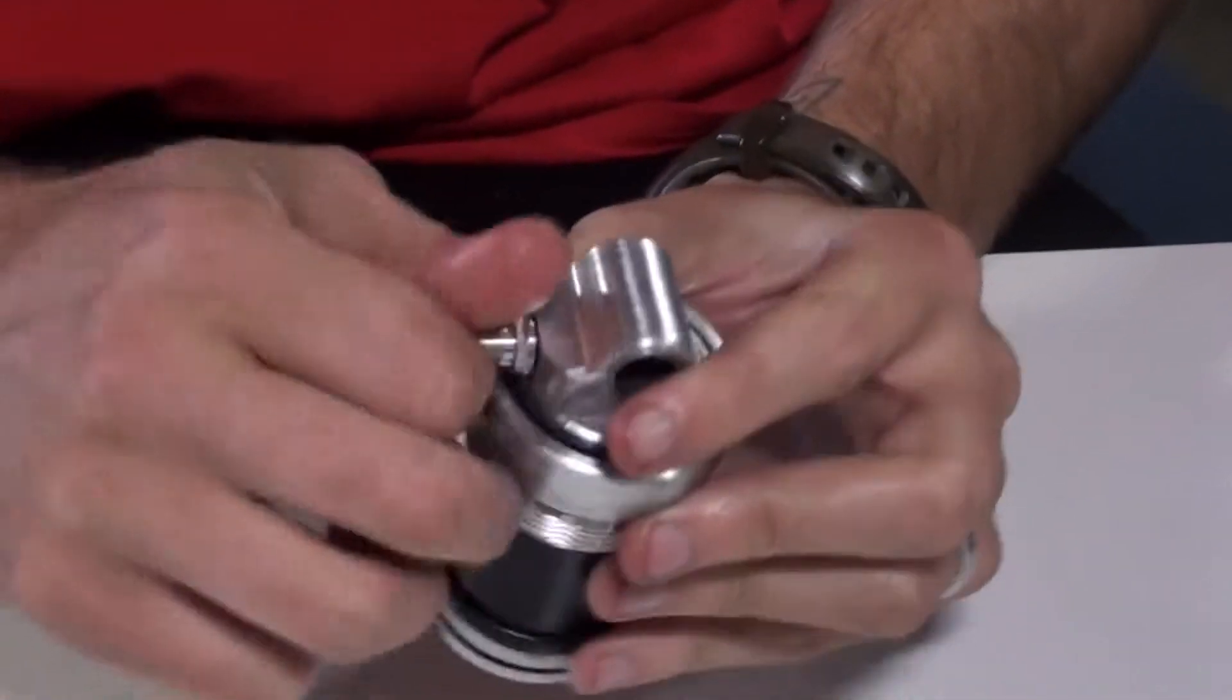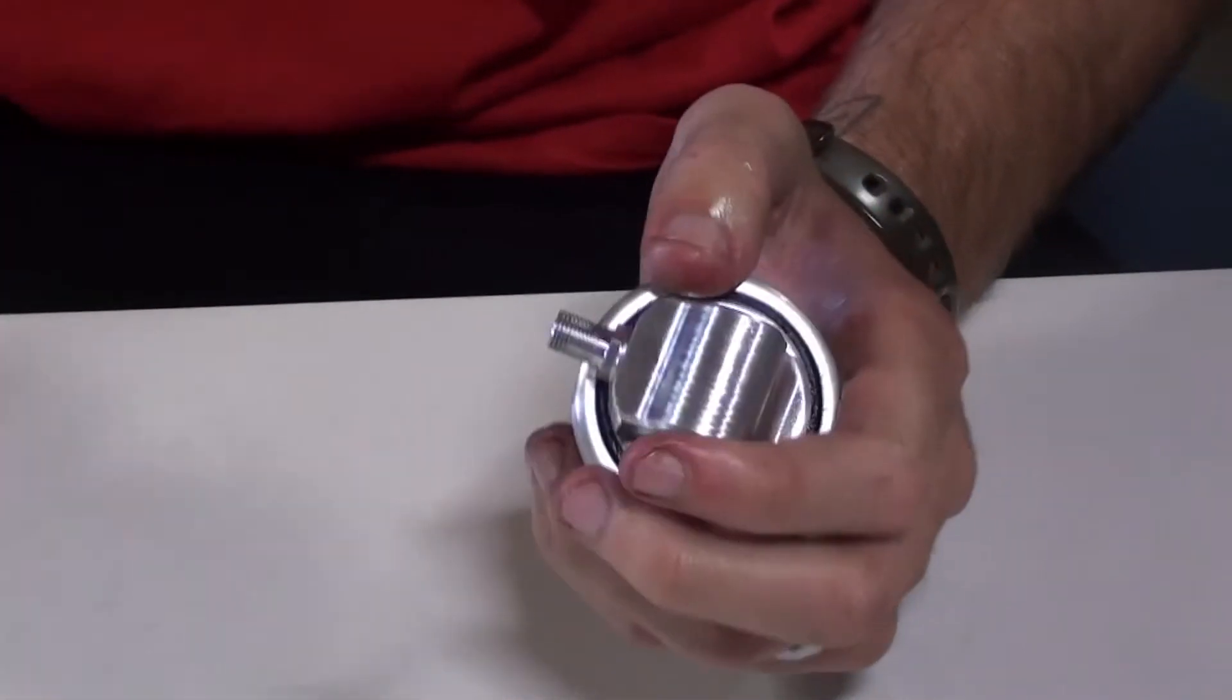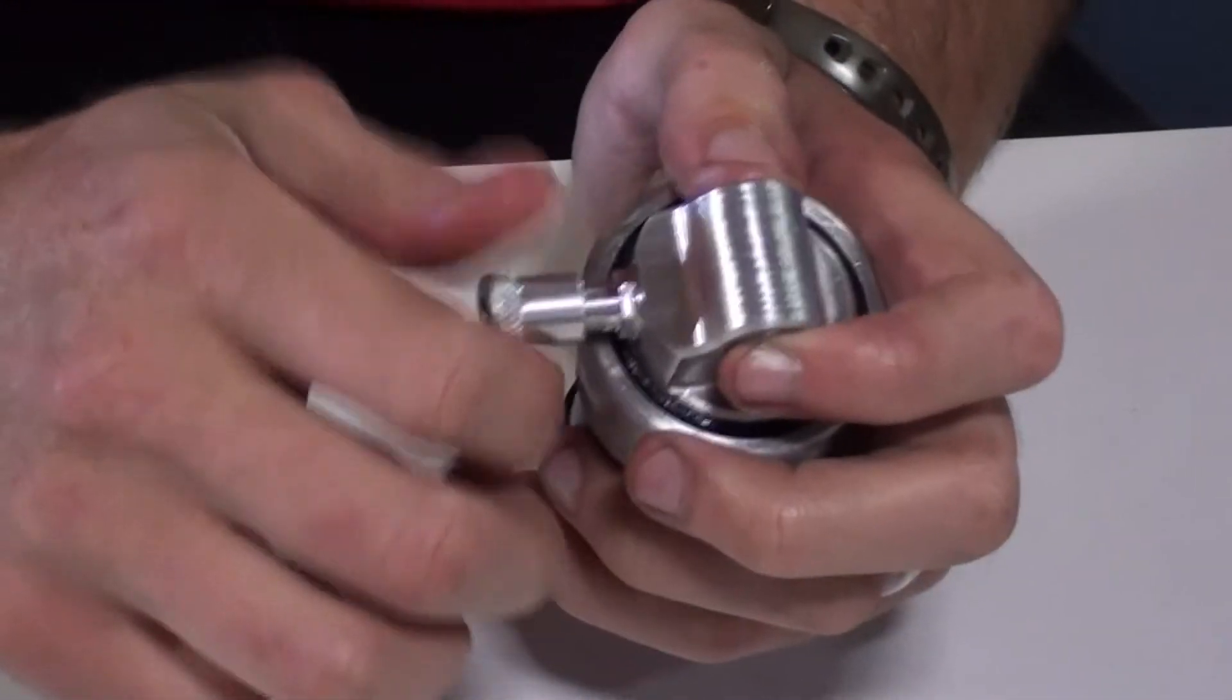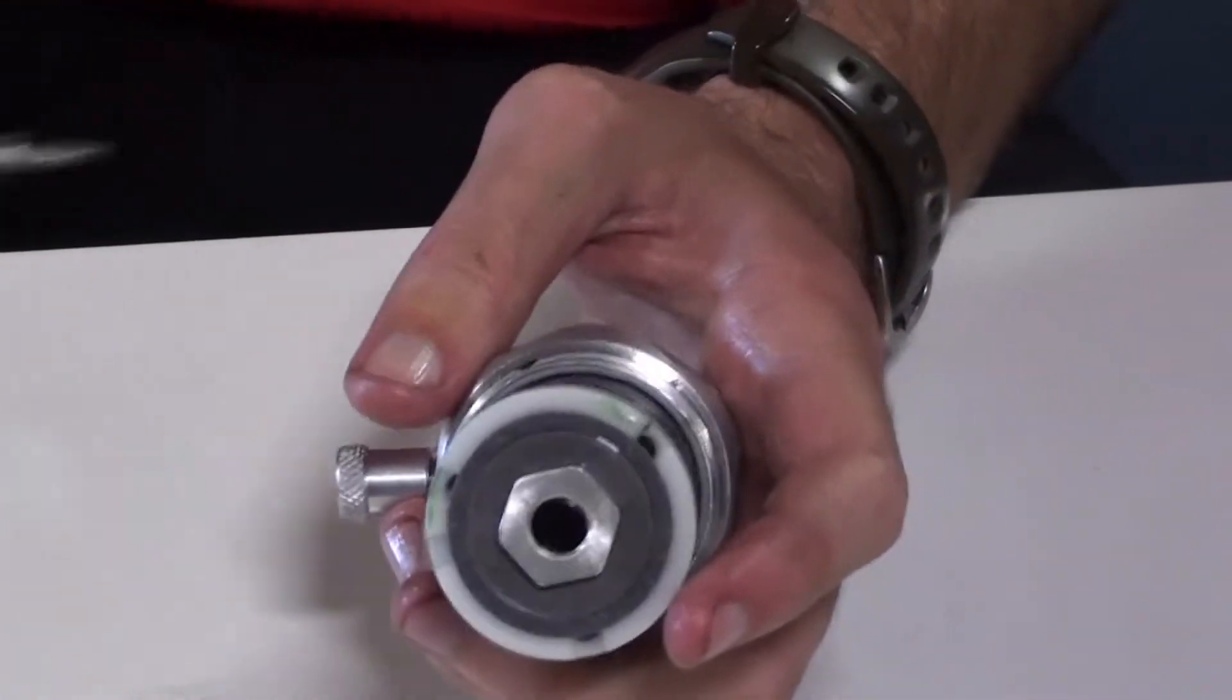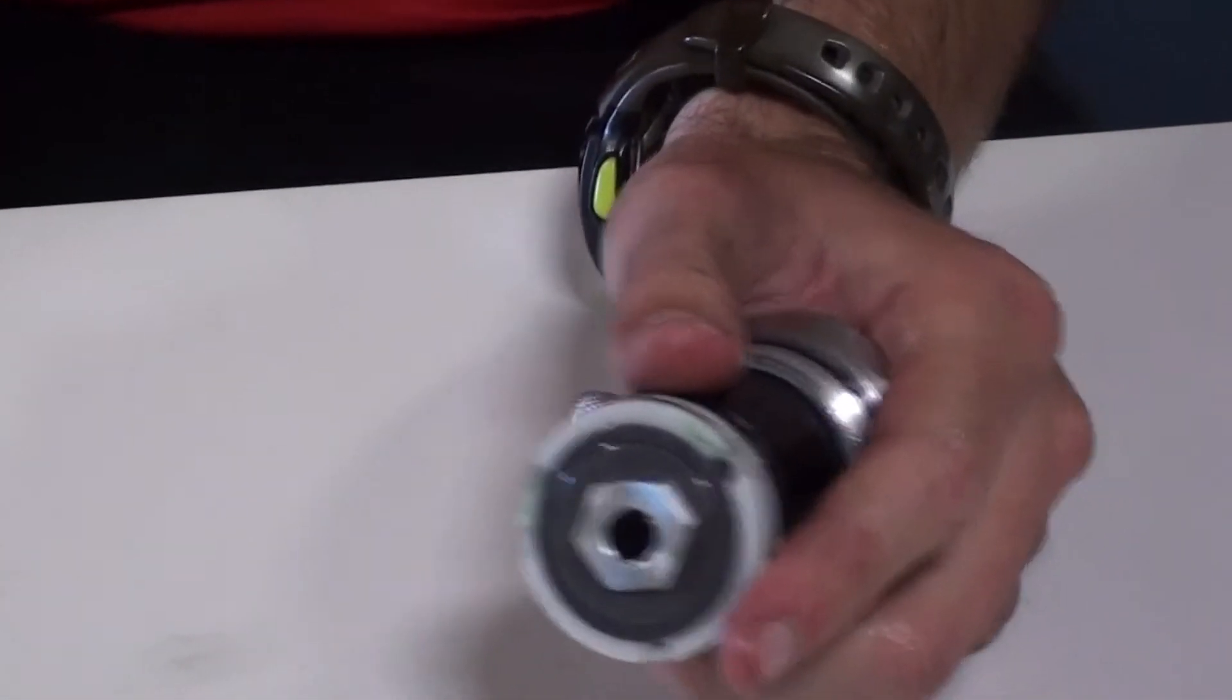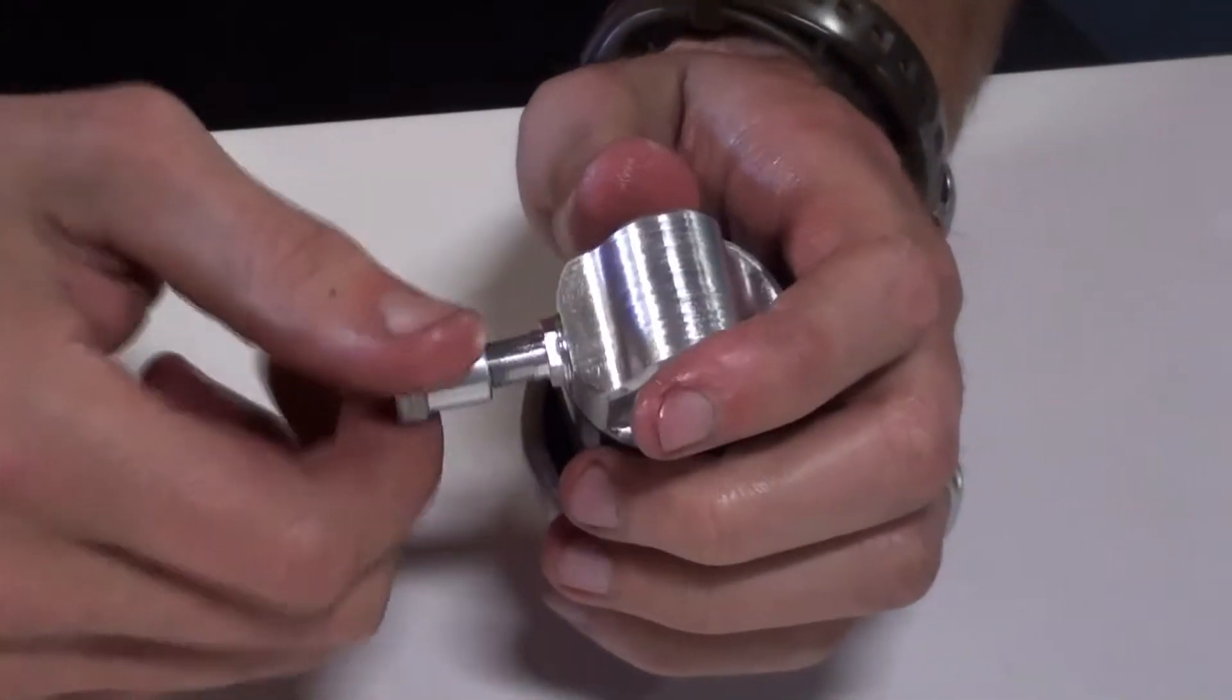Reinstall your Schrader valve. At this point, you should pressurize your shaft to about 50 psi, so that when you reinstall it, it has the proper balance of air to oil.